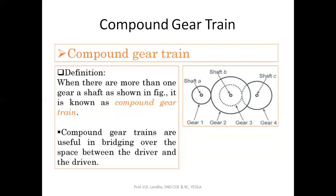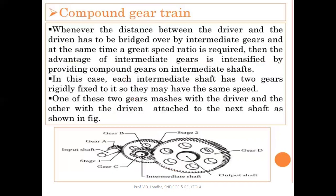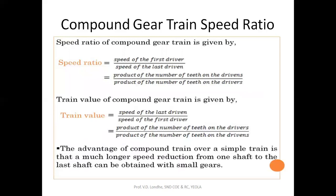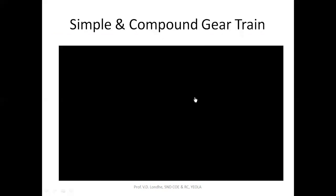In the compound gear train, there is no need to provide idler gears, and whatever speed ratio is required as per the application can be obtained. The formulas give us the speed ratio. The advantage of compound gear train over simple gear train is that much larger speed variation can be achieved.